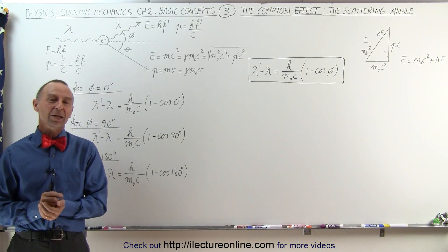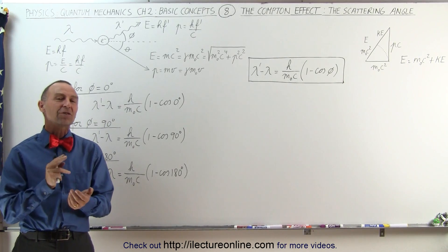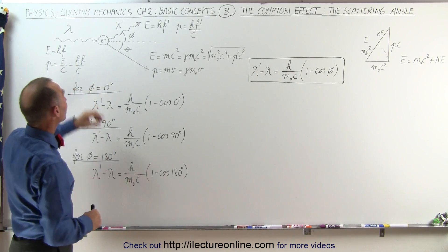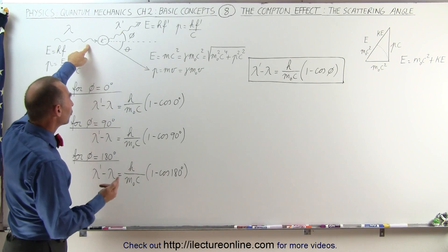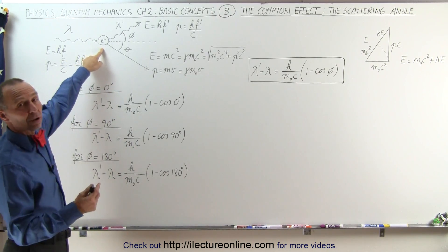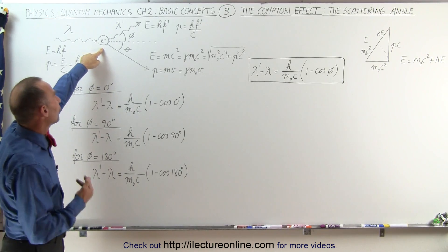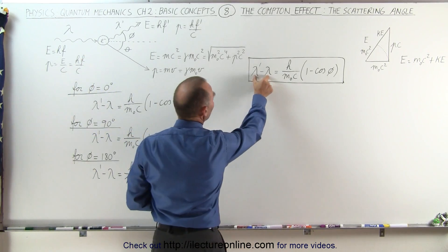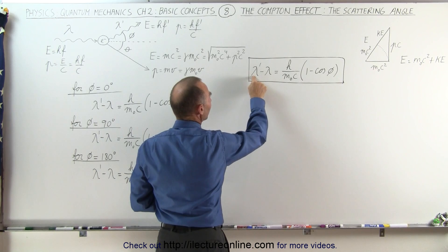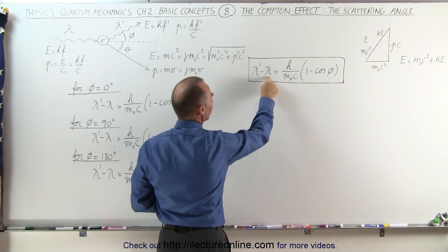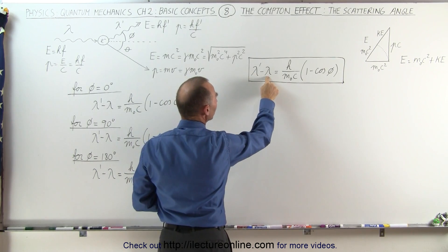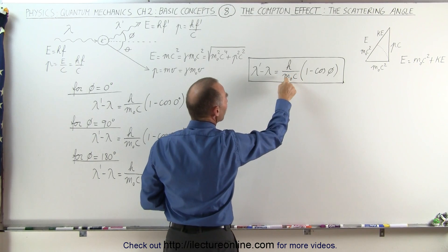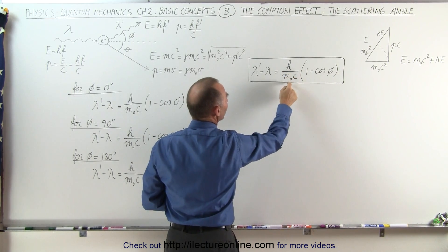Welcome to ElectronLine. There are two factors that affect the change in the wavelength of a scattered photon. The first one is the mass of the particle off of which the photon scatters. The difference in the wavelength — the wavelength of the outgoing photon minus the wavelength of the incoming photon — is equal to Planck's constant divided by the mass of the particle times the speed of light.